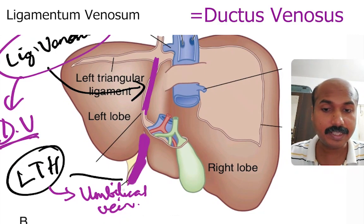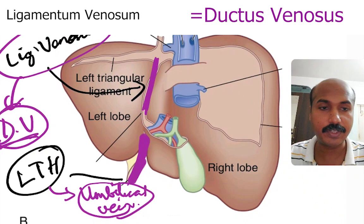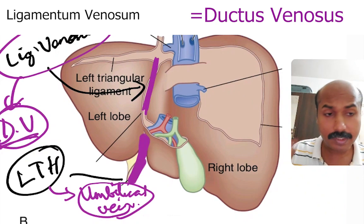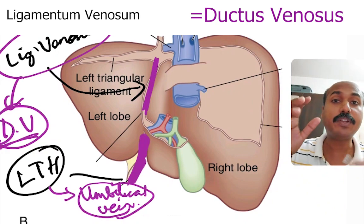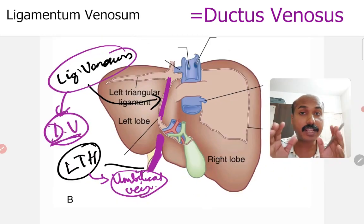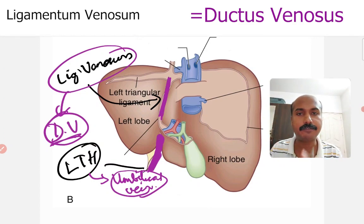So here it is the umbilical vein, and here it is the ductus venosus. Ductus venosus is a very important vascular shunt that was present in the fetal circulation.